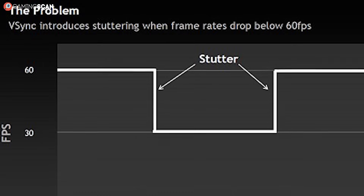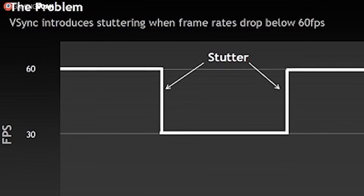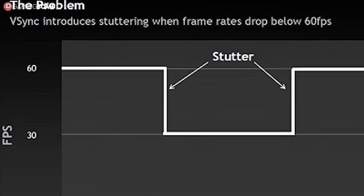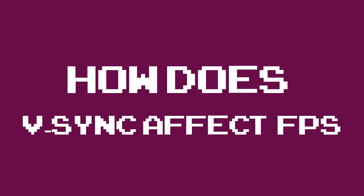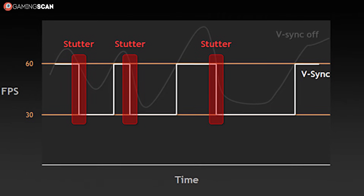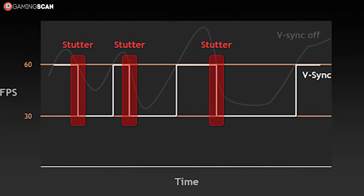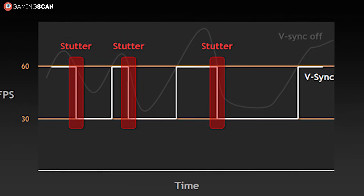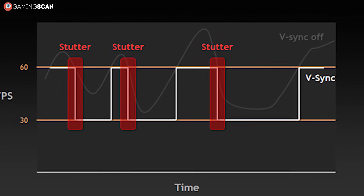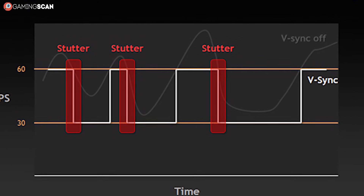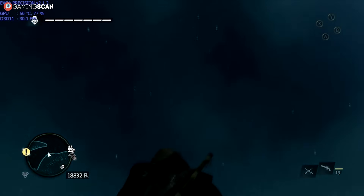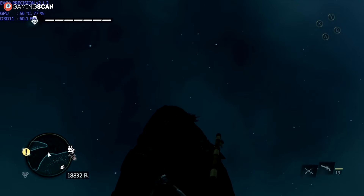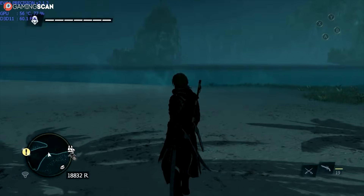Or it should — except that Vsync can also have a negative impact on your FPS. Vsync can actually reduce your FPS even further, as low as 30 FPS in fact, should your GPU fail to consistently render a stable 60 frames per second.